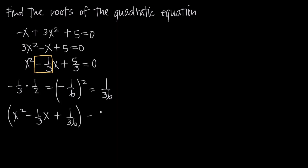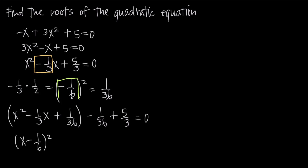This is going to be what we can find the perfect square of, and then we're going to have minus 1 over 36 plus 5 thirds is equal to 0. If we factor x squared minus 1 third x plus 1 over 36, we're going to get the perfect square x minus 1 sixth, squared. We can find that by factoring, or we can just take the value negative 1 sixth that we found earlier and plug it in.